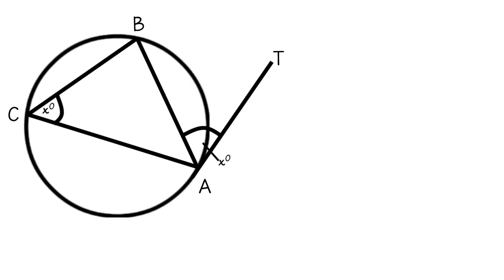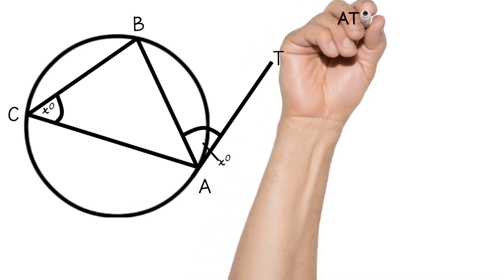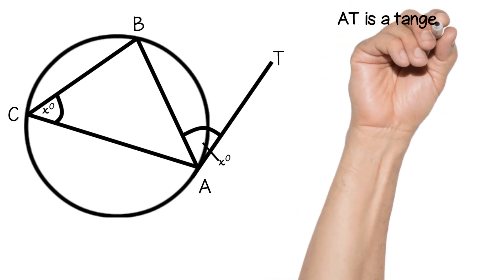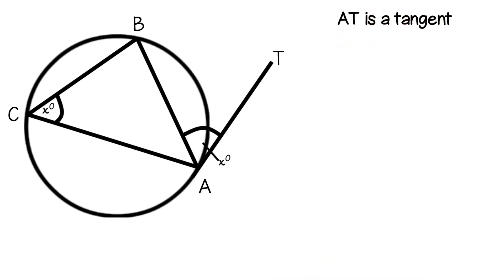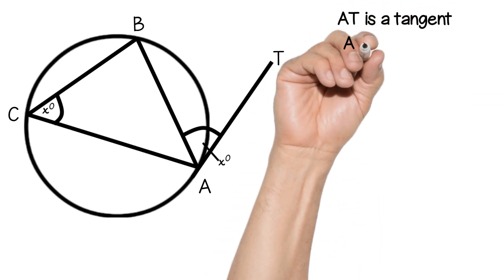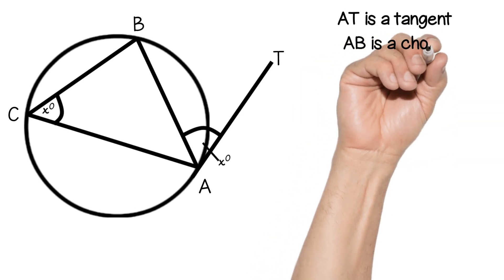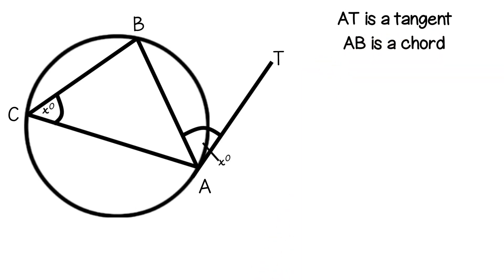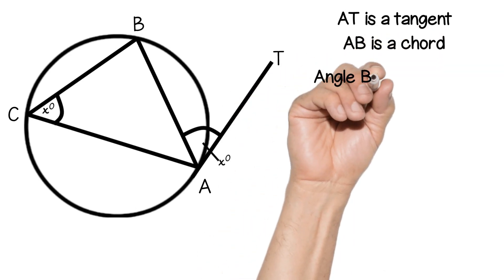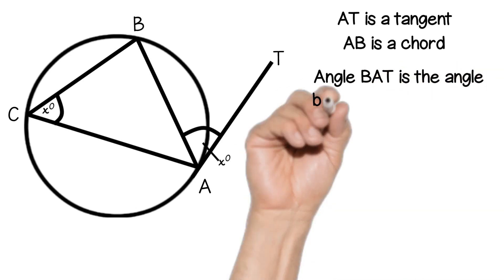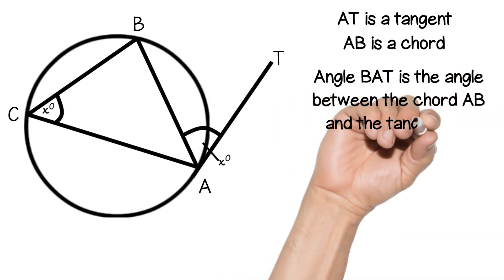We have a triangle within a circle and all three corners are touching the circumference of the circle. We have AT, which is a tangent to the circle. We have AB, which is a chord and also a side of the triangle. And we have angle BAT, which is X, and that is between the chord and the tangent.